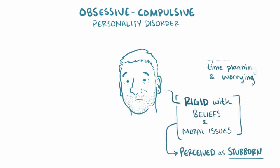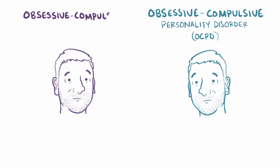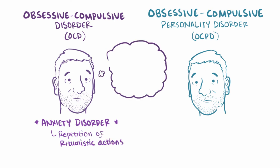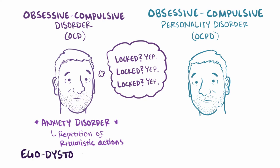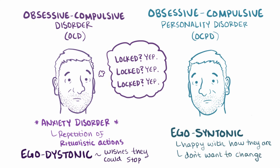The name obsessive-compulsive personality disorder, or OCPD, sounds a lot like obsessive-compulsive disorder, or OCD, which is a different disorder with some overlap in symptoms. OCD is an anxiety disorder where there is a repetition of ritualistic actions, like checking the door over and over again to make sure it's locked. The key difference is that OCD is called an ego-dystonic condition, because the person wishes they could stop the behavior. In contrast, OCPD is ego-syntonic, meaning that the person is generally happy with how they are and don't want to change anything about themselves.